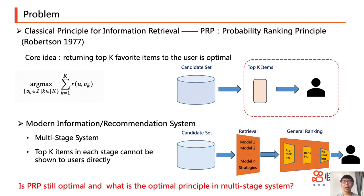However, in contemporary information retrieval and recommendation systems like ours at Kuaishou, we operate within a multi-stage framework comprising stages like retrieval, pre-ranking, ranking, and re-ranking. In such complex systems, top-k items from intermediary stages are not directly accessible to users.